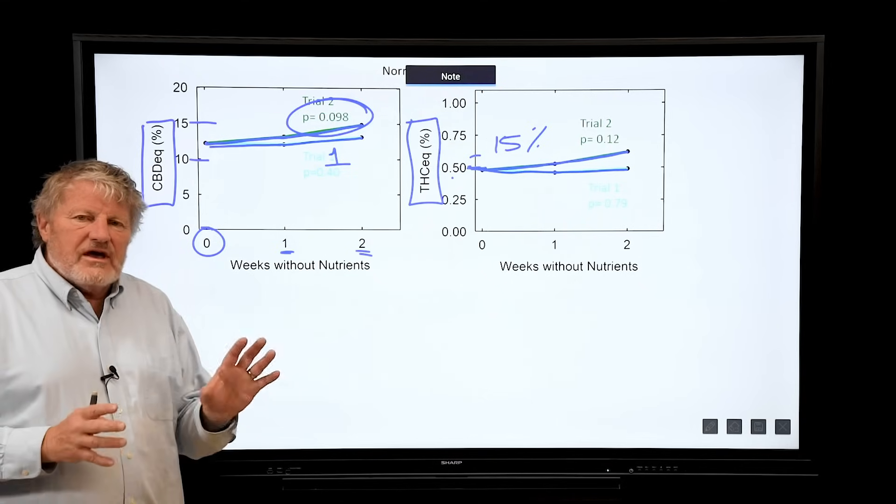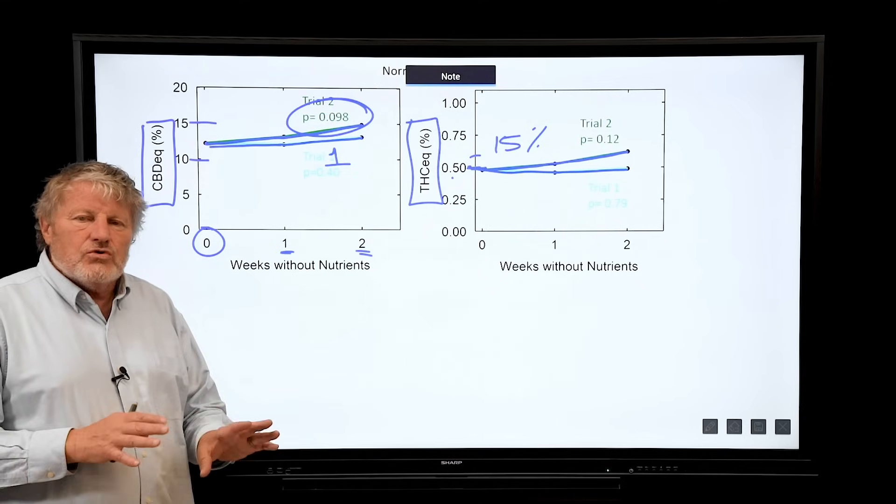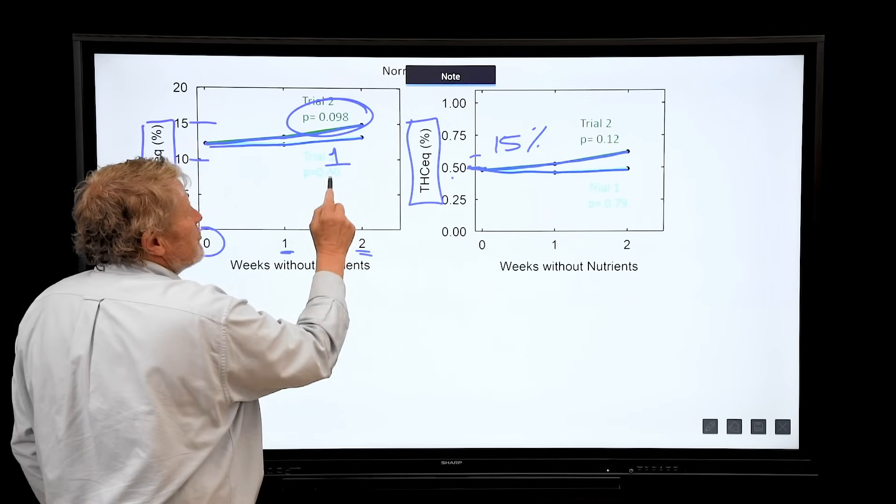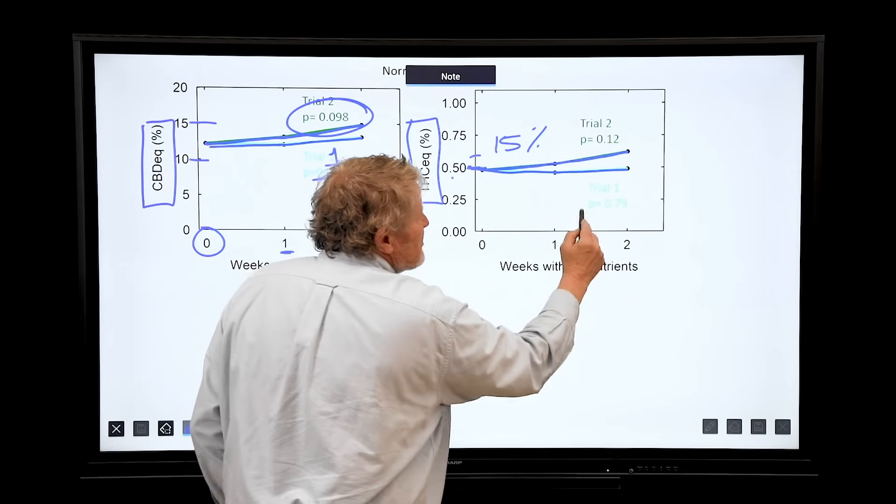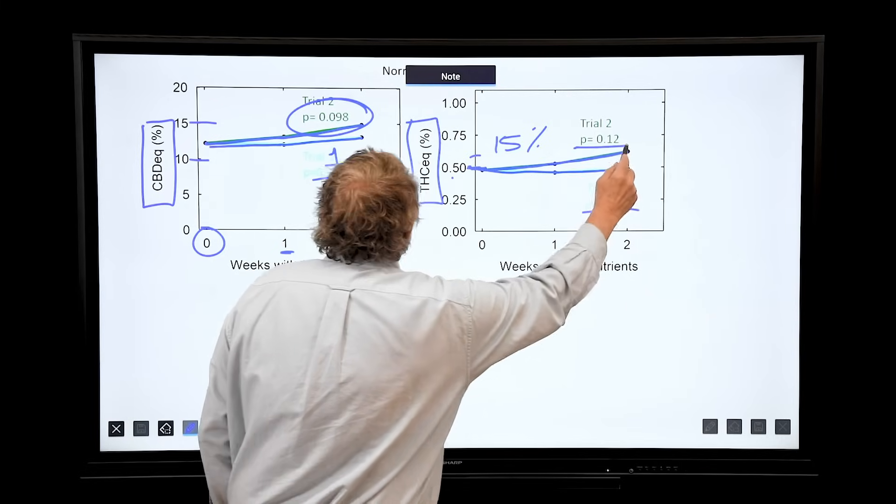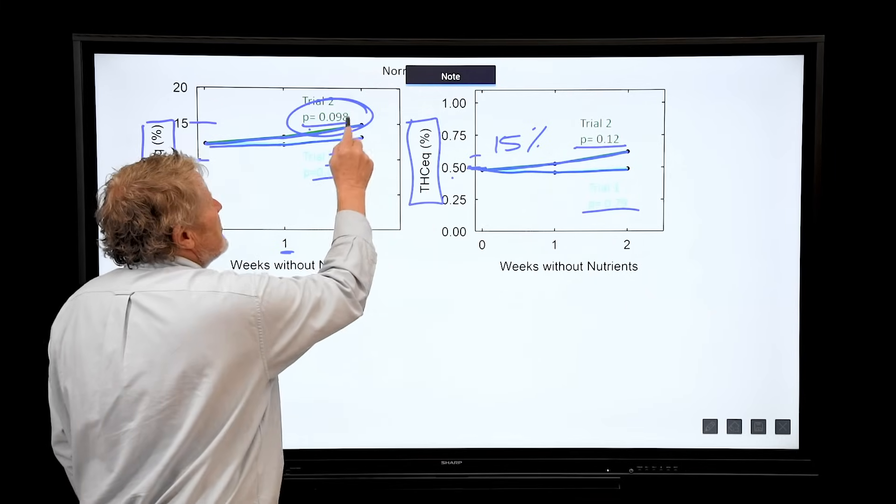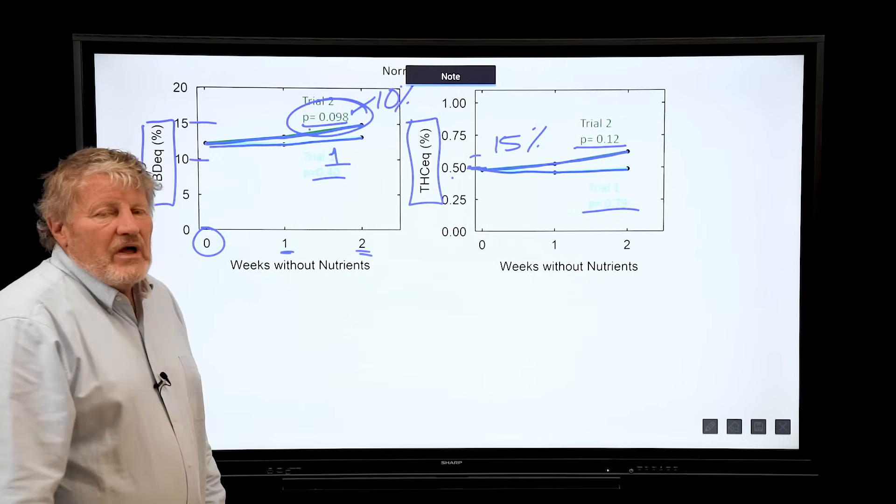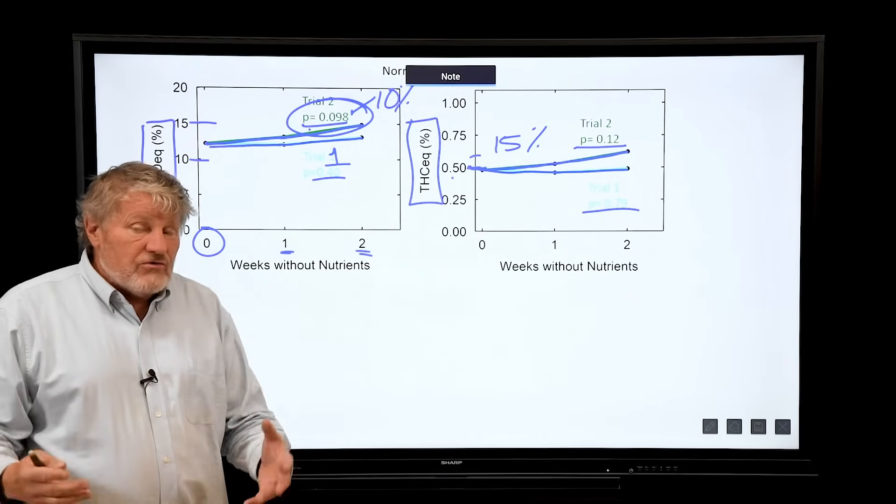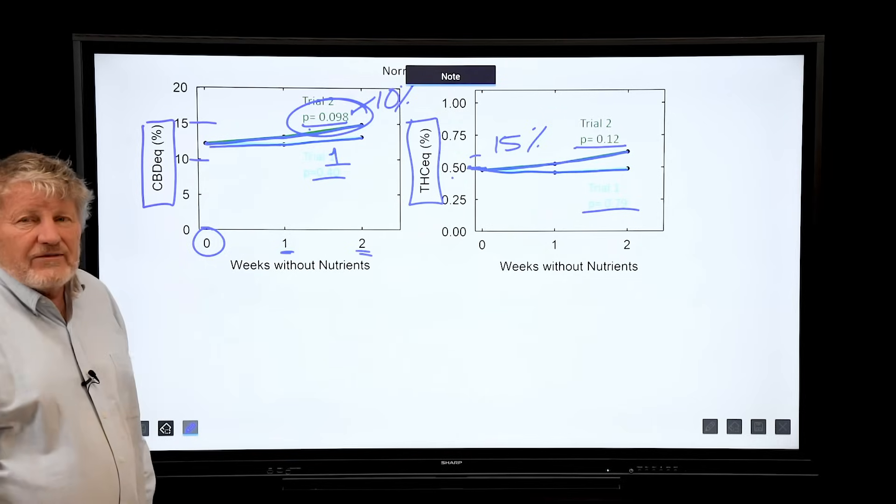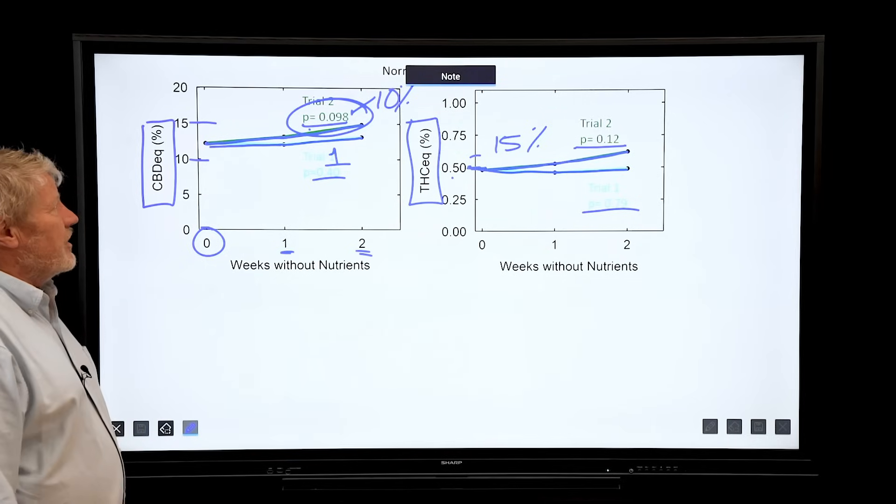So this number right here, these are all 40 percent chance, 79 percent chance, but look at trial two, a 12 percent chance, and this number we're gonna round that to a 10 percent chance. Now we'd like to be more sure than a 10 or 12 percent chance, so we're looking at this to follow it up. There is some evidence of a slight increase in yield.